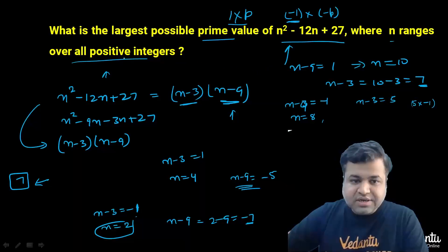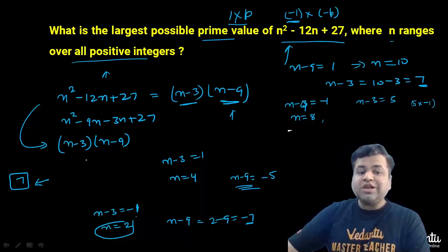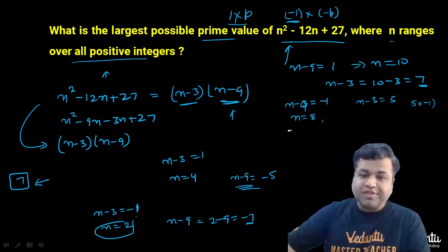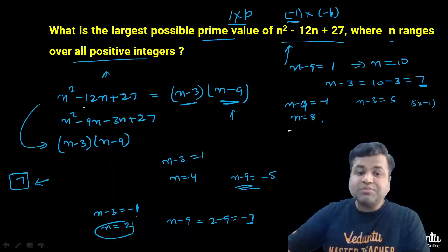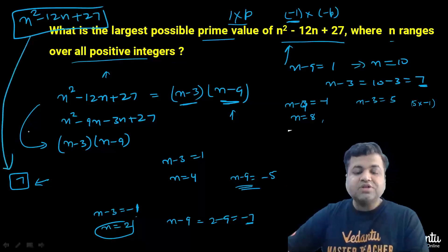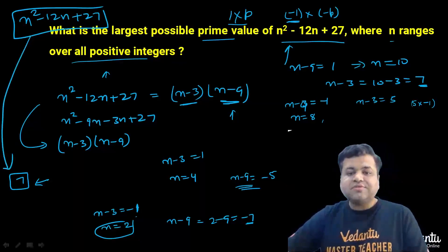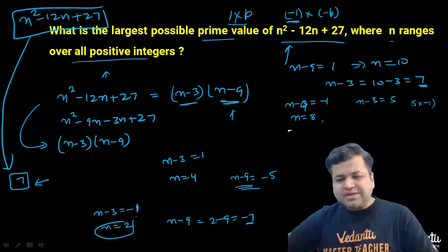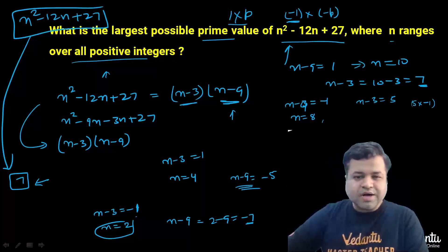So the largest possible prime value of this thing, that is the largest possible prime number which is of the form n² - 12n + 27, is 7. So the answer to today's dose will be 7. And this is a typical question of two marks from IIT JEE, right.